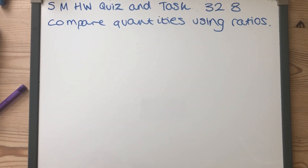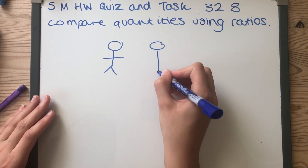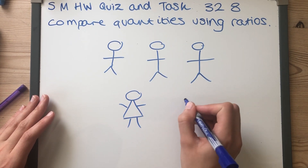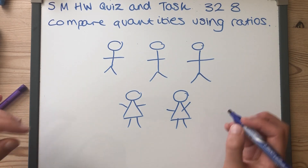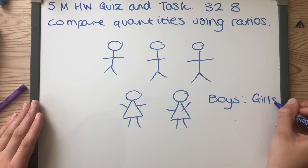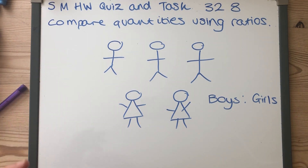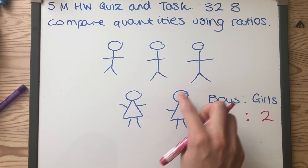I want to take it back to basics. If in a classroom I have three boys and two girls, I want to know what the ratio of boys to girls is. We use a colon in the middle, which means 'to', so boys to girls. The ratio of boys to girls in this particular class would be three to two, because I've got three boys and two girls.